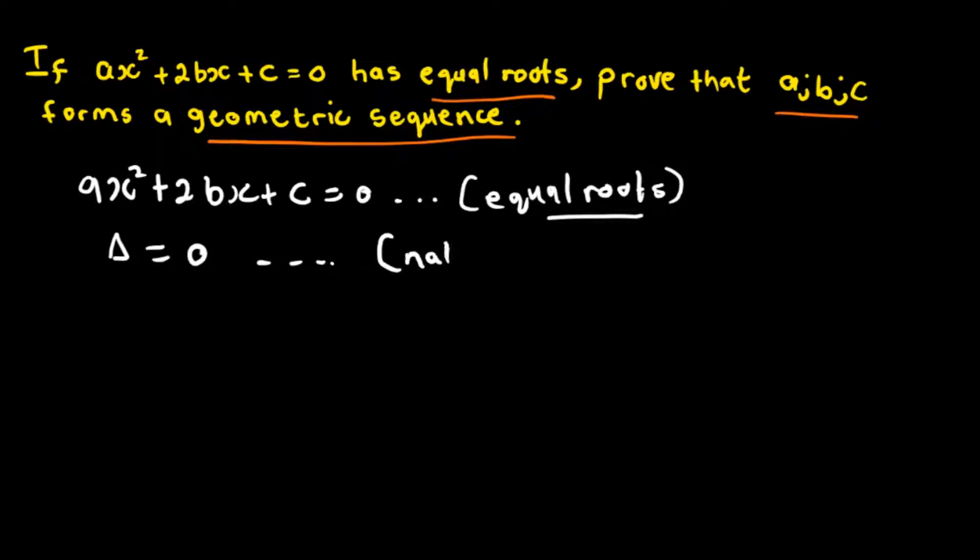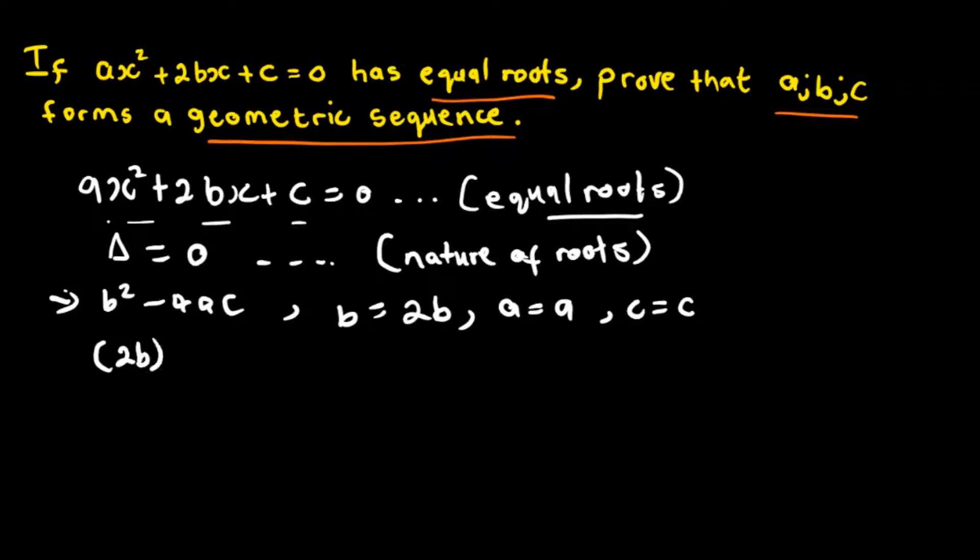The discriminant equals b² - 4ac. From our equation, the coefficient of x² is a, the coefficient of x is 2b, and the constant is c. Substituting into the discriminant formula: (2b)² - 4ac.